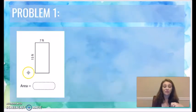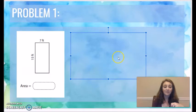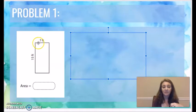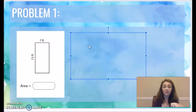Here's our first problem. To find the area of this rectangle, we know that it's 7 feet across and 15 feet up and down. Our formula tells us that we are going to multiply 7 times 15.